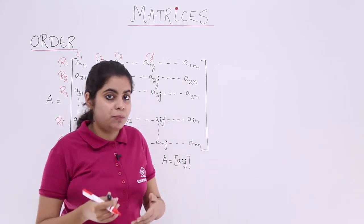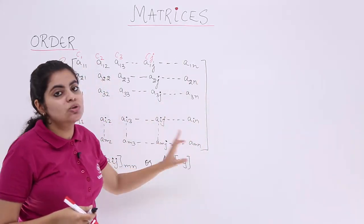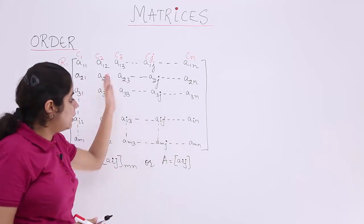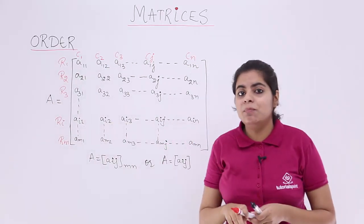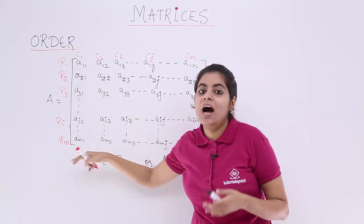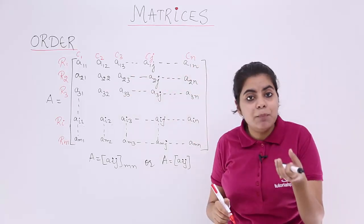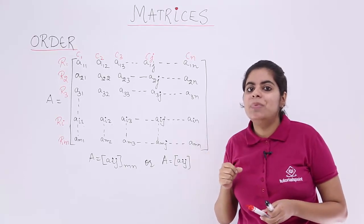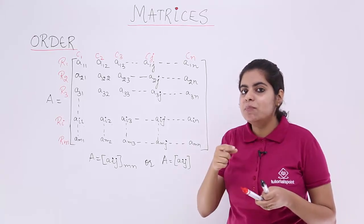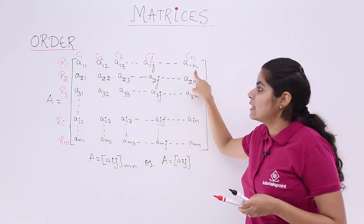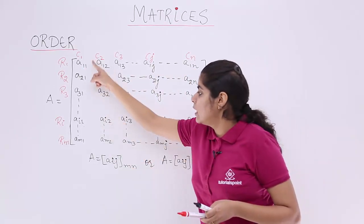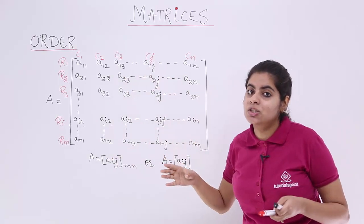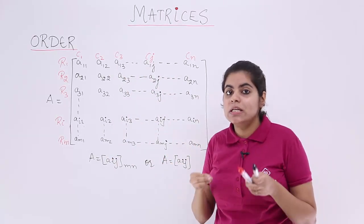So the represented matrix has m rows and n columns. The number of elements in one row is n, the number of elements in any one column is m, and the total number of elements is the product: m into n, that is number of rows into number of columns.